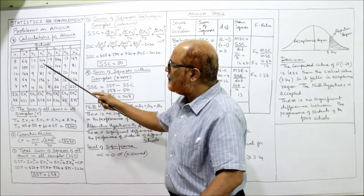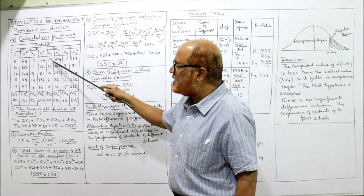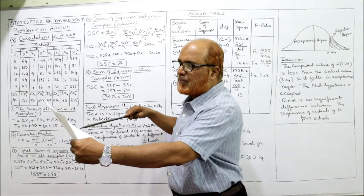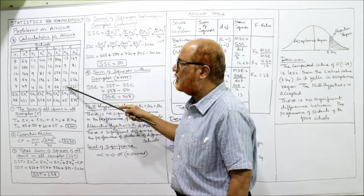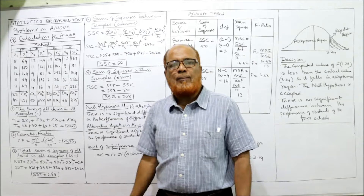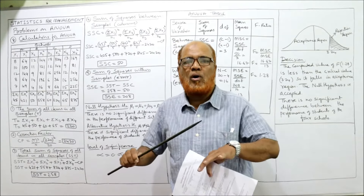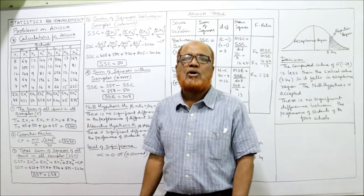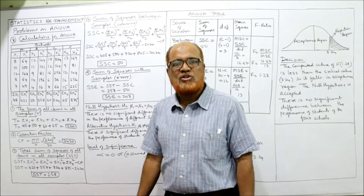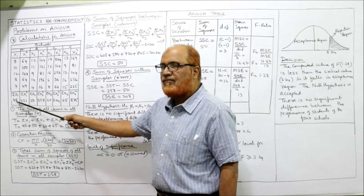School B values: 12, 11, 9, 14, 4 — square them and take the total. School C: 12, 18, 16, 6, 8 — square and total. School D: 13, 9, 12, 16, 15 — square and total. Now the first step: find T, the total of all items in all samples. T = summation x1 + summation x2 + summation x3 + summation x4 = 45 + 50 + 60 + 65 = 220.